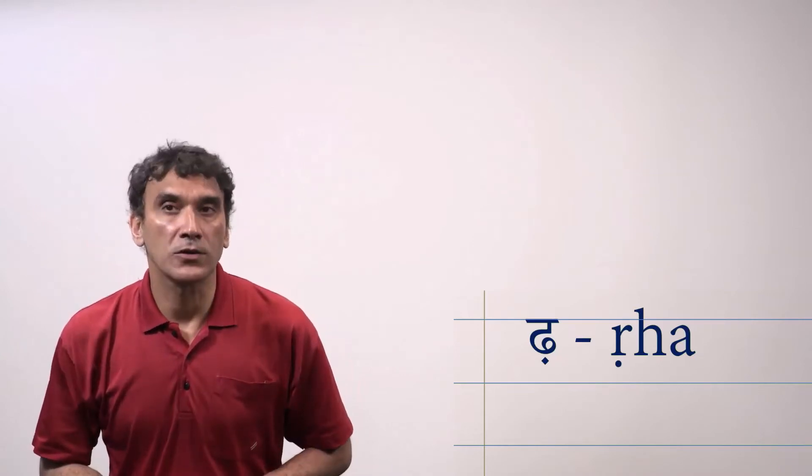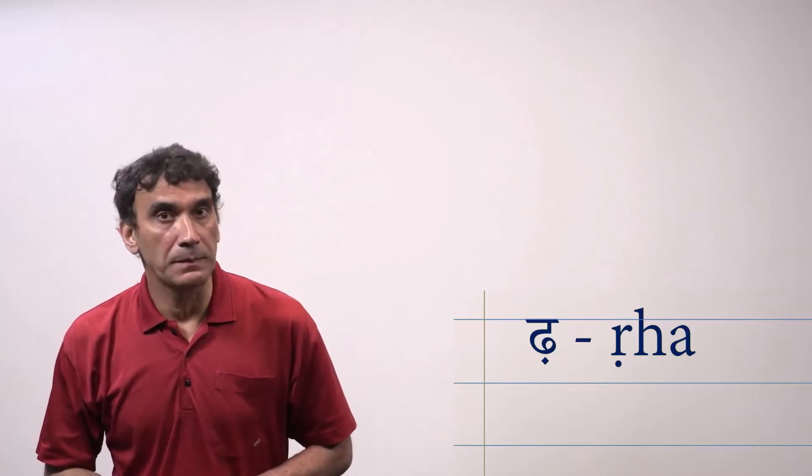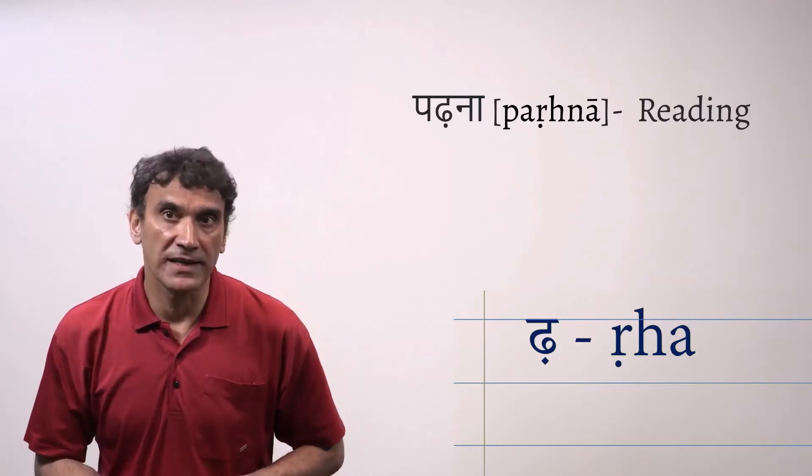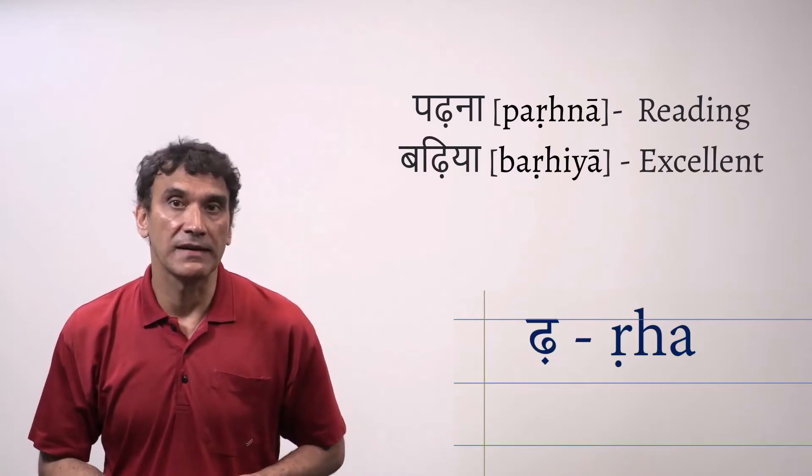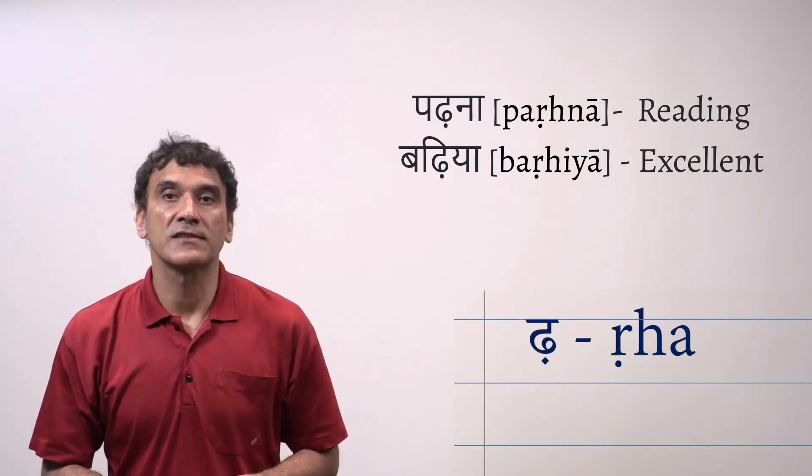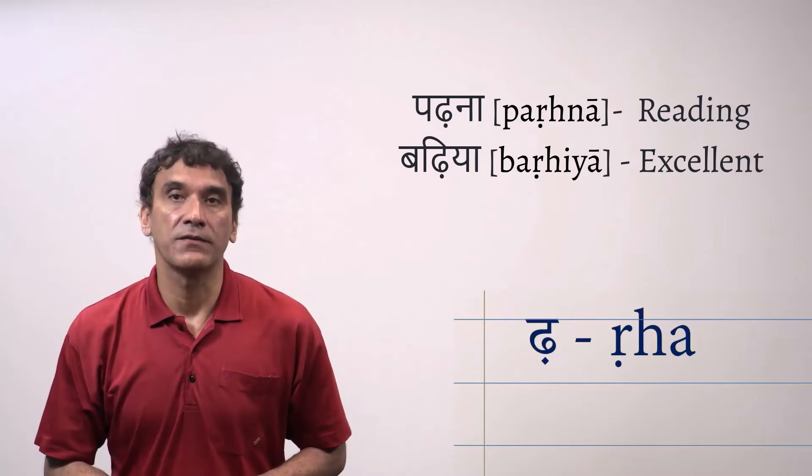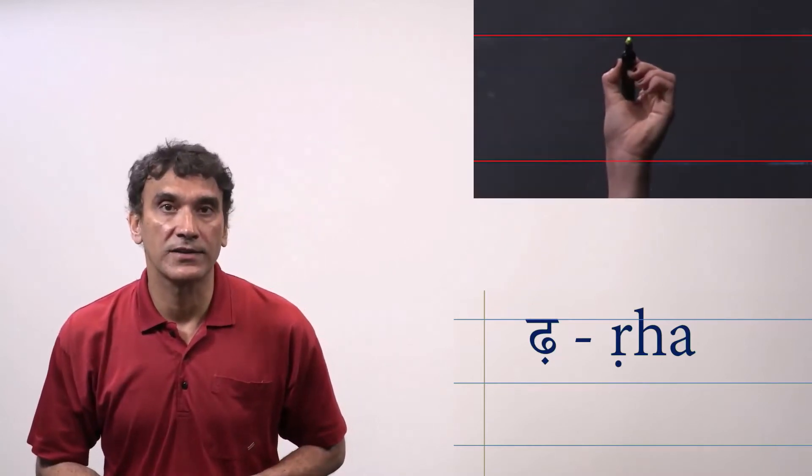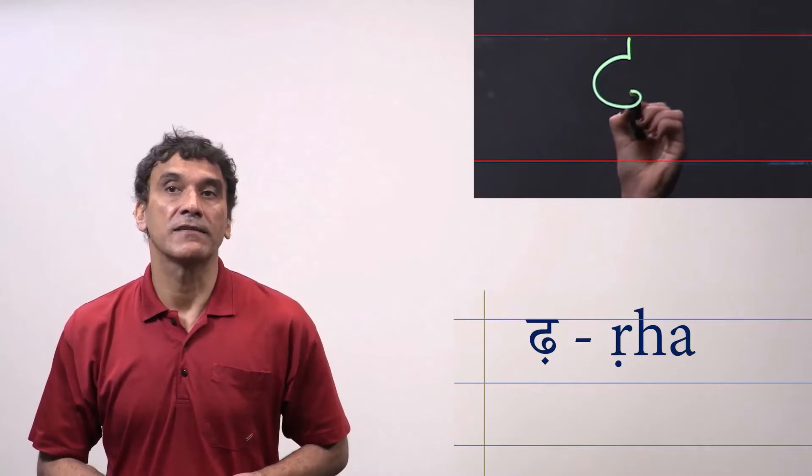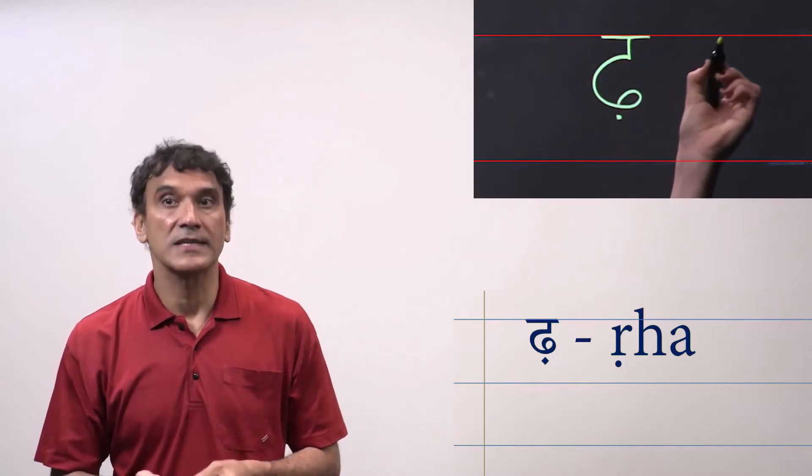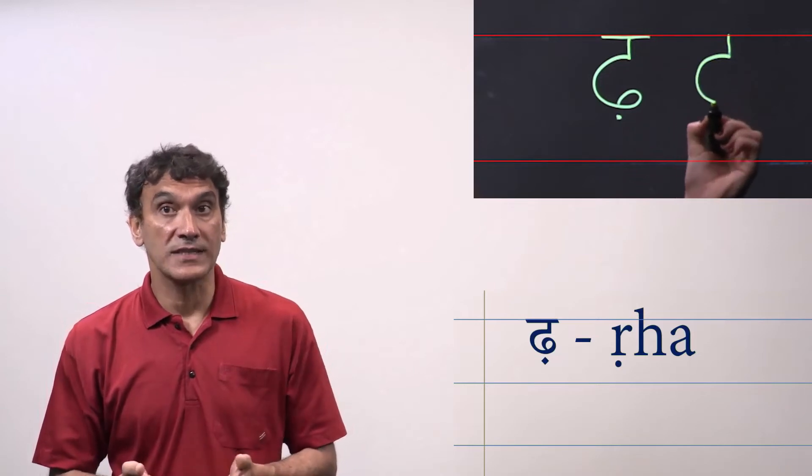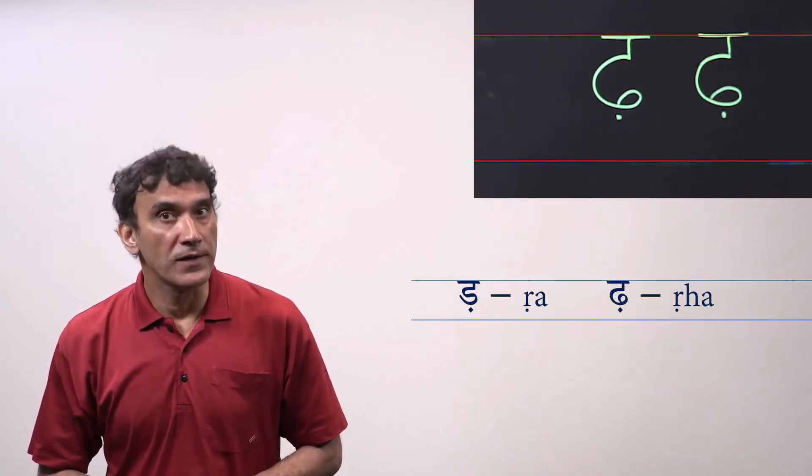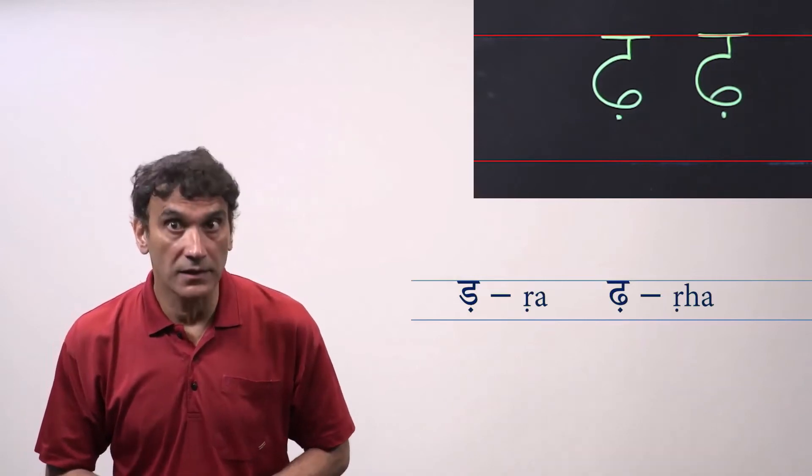This consonant also never comes in the beginning of a word but it appears very commonly in many Hindi words such as Padhna meaning reading, Badhiya meaning excellent. It is transliterated as R, H, A with a dot under the letter R. And you can see how it is handwritten. It is written like a retroflex voiced aspirated DHA but this time a dot underneath. So the sound is Rh. And please make sure that you always write Nukta under R and Rh.